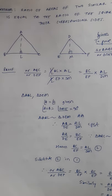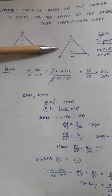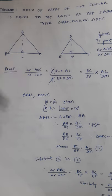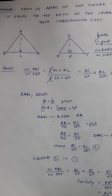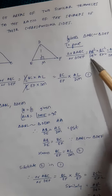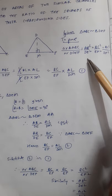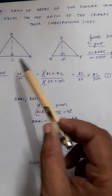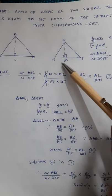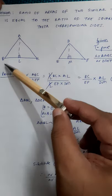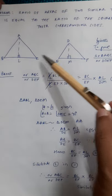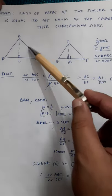What is given to us is that there are two triangles ABC and triangle DEF, and they are given similar. What we need to prove is that the ratio of their areas — area of ABC by area of DEF — is equal to the square of their sides. That means AB square by DE square, or BC square by EF square, or AC square by DF square.